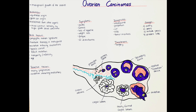Another large risk factor is age. Protective factors are having had several pregnancies and the long-term use of ovulation-inhibiting medications, such as oral contraceptives or intrauterine contraceptive devices. This is due to the reduction of the total number of ovulations in a lifetime.